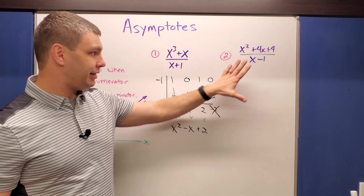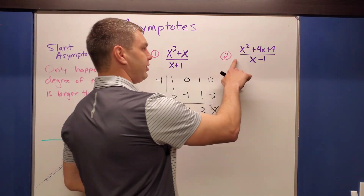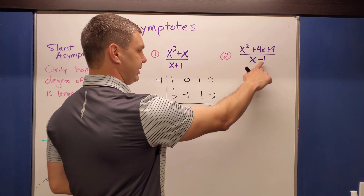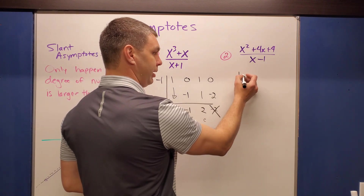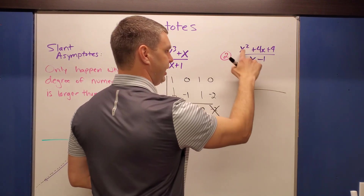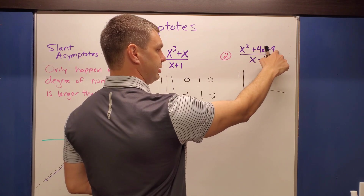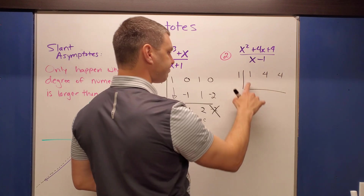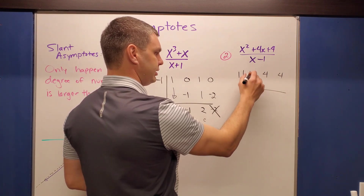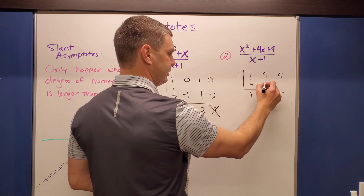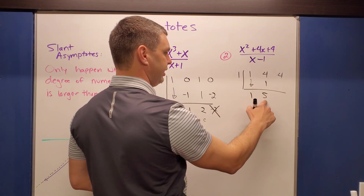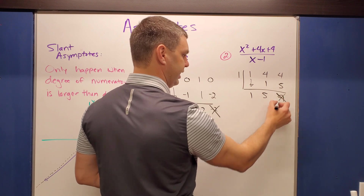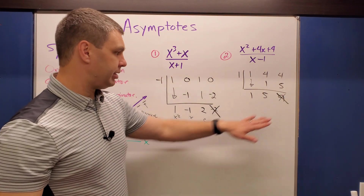Let's check example two: x² plus 4x plus 4 over x minus one. Setting the bottom equal to zero gives x equals one, so we divide by positive one. The coefficients are one, four, and four. Bringing down: one times one is one; four plus one is five; five times one is five, giving a remainder of nine — which we do not use.